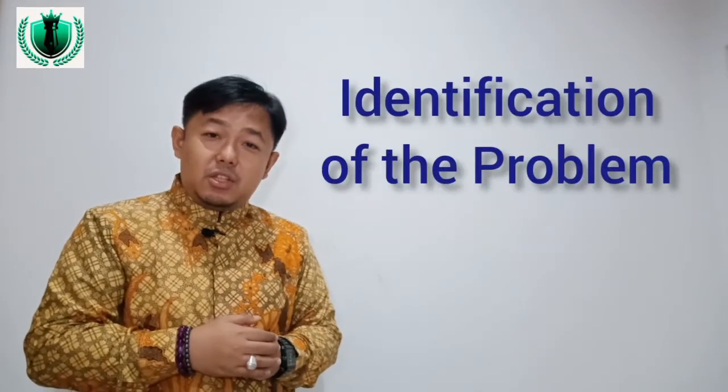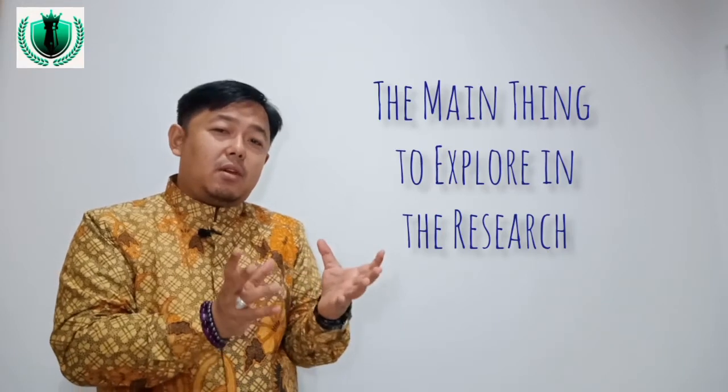After you state the background of the research, the second part of Chapter 1 is called the identification of the problem. In the background, you started with a broad conception of your research topic. Then in the identification of the problem, you specify what is the main thing that you're going to explore, analyze, investigate, or extrapolate from your research. If it needs to be a statement, then you need to state it explicitly. For example: this research is going to find out why EFL students in Indonesia are reluctant to speak in the classroom.